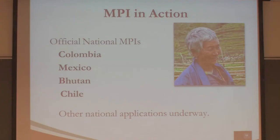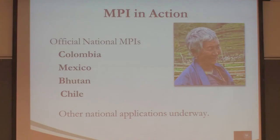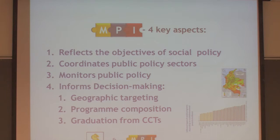I'm going to start with the example of Colombia, and go through all of those in most detail, followed by Mexico, because those are the two measures that have been embedded in many different aspects of the policy framework. Then we'll go to Bhutan and China. These slides are used with permission from the government of Colombia — from the planning department and from the social prosperity department.